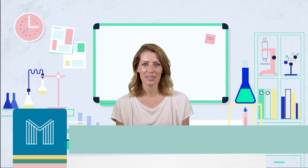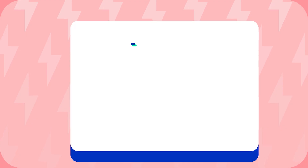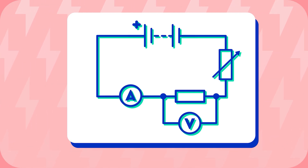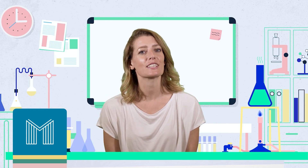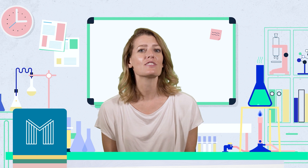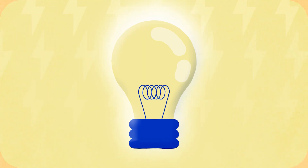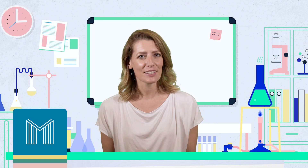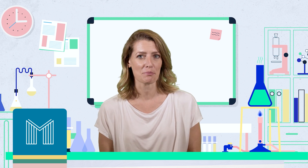Today we will be looking at circuit symbols. Circuit diagrams are used in physics to show us how electrical components should be arranged in circuits. You should be able to make a circuit using a circuit diagram, and by the end of the topic you should be able to look at a circuit diagram and predict what will happen when the circuit is turned on. In circuit diagrams, wires are shown using straight lines and electrical components are shown using circuit symbols.